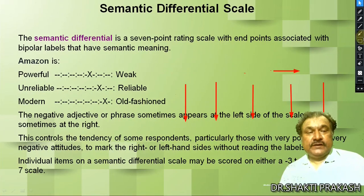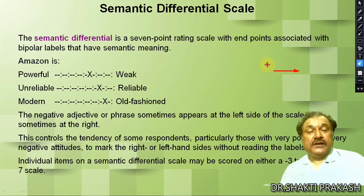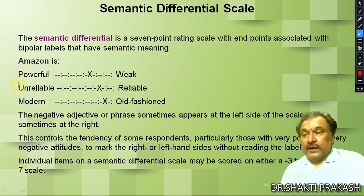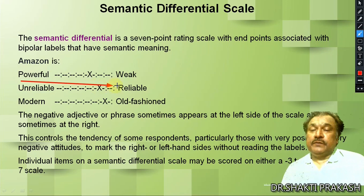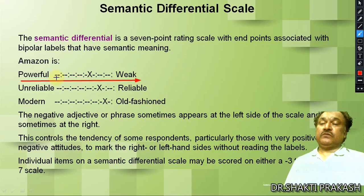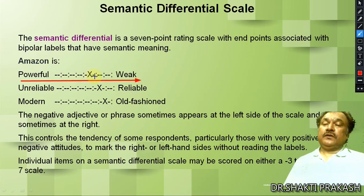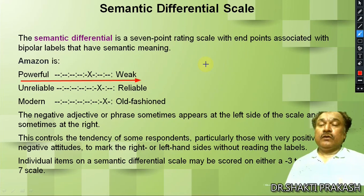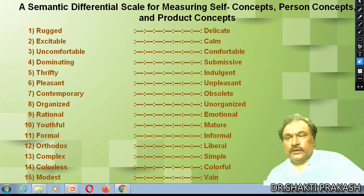Next we will discuss the Semantic Differential scale. This is another way you can design your questions. Here one side is 'powerful' and the other side is 'weak' — it is a 7-point scale. If a person wants to give the answer as 'powerful' they tick at position 1. The scale runs from 1 to 7. Other bipolar pairs include: unreliable–reliable, modern–old fashioned. The Semantic Differential scale is used for measuring self concepts, person concepts, and product concepts.